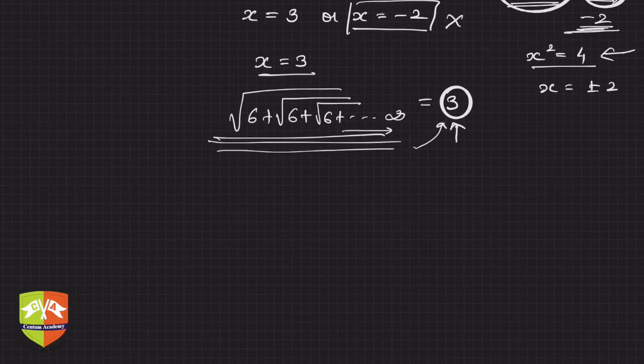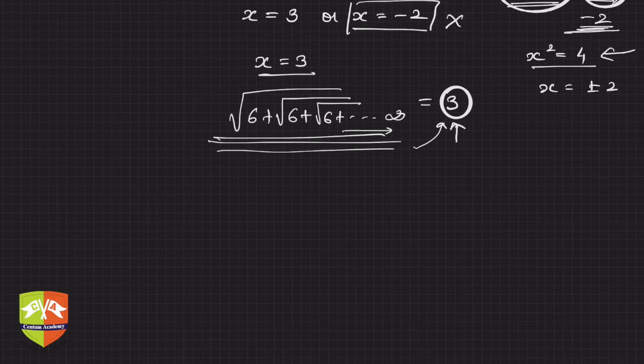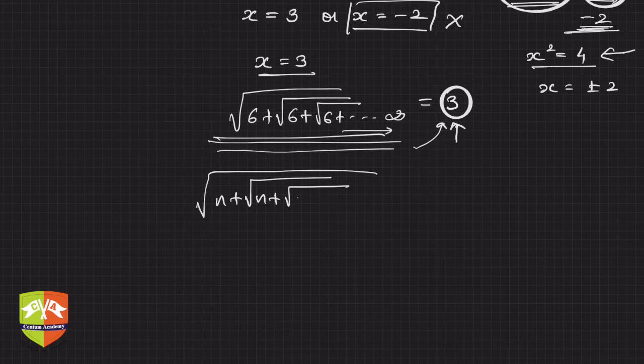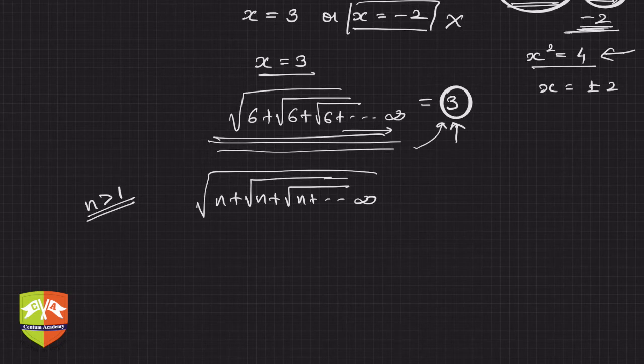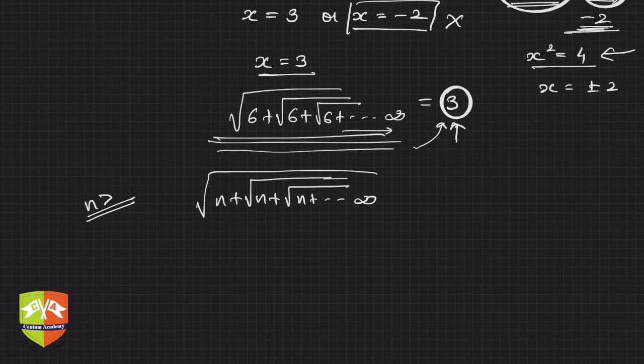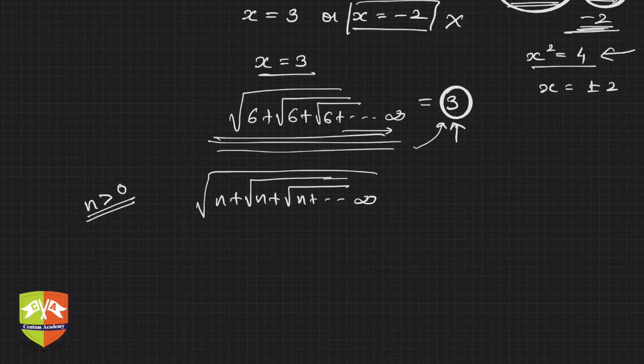You can generalize this actually. So how to generalize? So if you see, if you have this n plus under root n plus under root n plus so on and so forth till infinity, the value, you have to be careful that here n is greater than 1. I'm sorry, n is greater than 0, not 1. So n has to be a positive quantity.